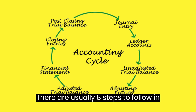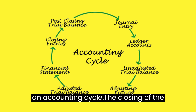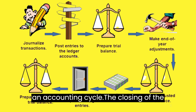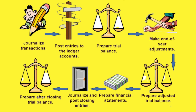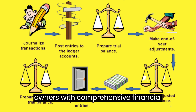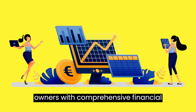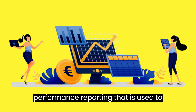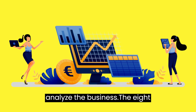There are usually eight steps to follow in an accounting cycle. The closing of the accounting cycle provides business owners with comprehensive financial performance reporting that is used to analyze the business.